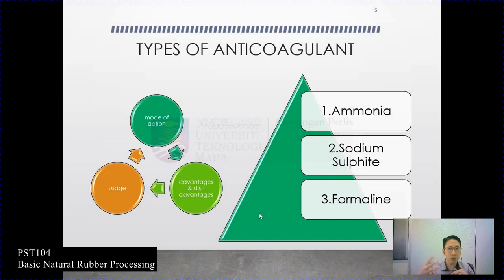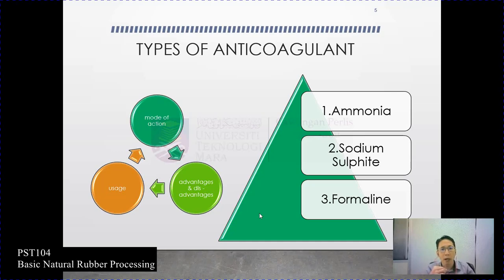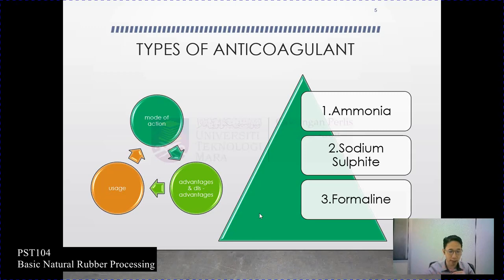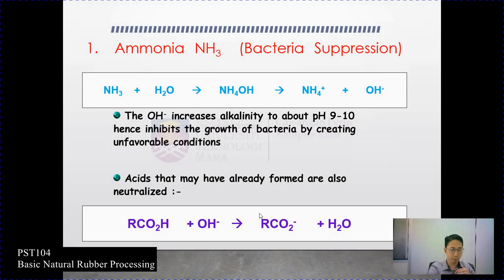There are three types of anticoagulants commonly used: ammonia, sodium sulfite, and formalin. For each of these, we will go through the mode of action, the usage, and finally the advantages and disadvantages. So let's start with the first one — ammonia.